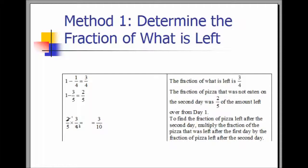To find the fraction of pizza left over after the second day, multiply the fraction of the pizza left over from the first day by the fraction of pizza left over from the second day. That's two-fifths times three-fourths, which is three-tenths.